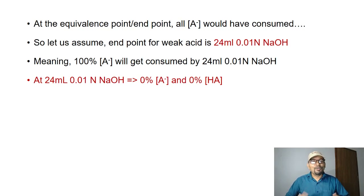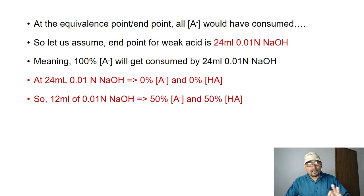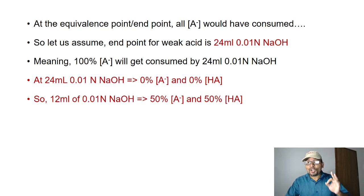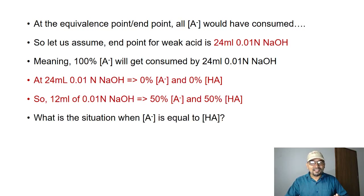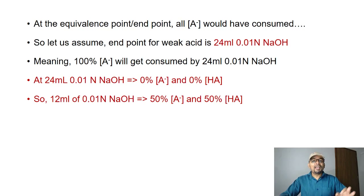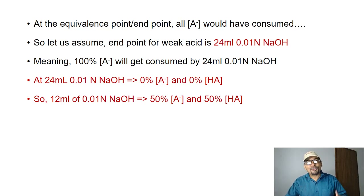Now, the next point is very important. At exactly 12 ml — 50% of the total titrant consumed — that is 12 ml of 0.01 N NaOH, you will have 50% of A⁻ and 50% of HA. This is exactly the situation where A⁻ equals HA. When you have added 12 ml of 0.01 N NaOH during the titration, you are left with equal amounts of A⁻ and HA, and this is the condition where pKa equals pH.